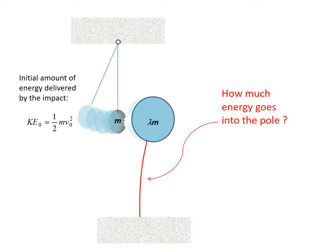Striking a lump mass which is supported on a pole. The amount of kinetic energy delivered by the impact is half m v0 squared. The question is, how much of this energy goes into the pole?